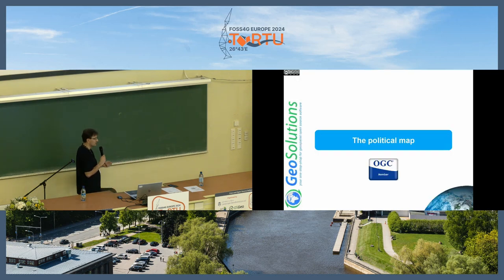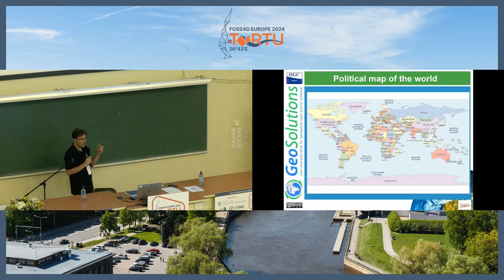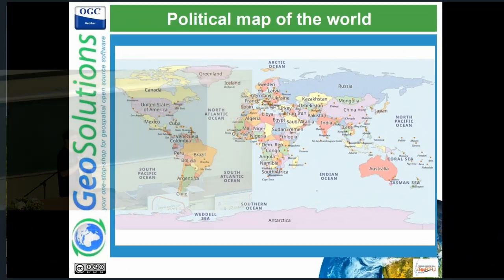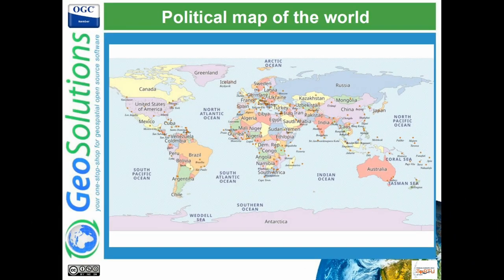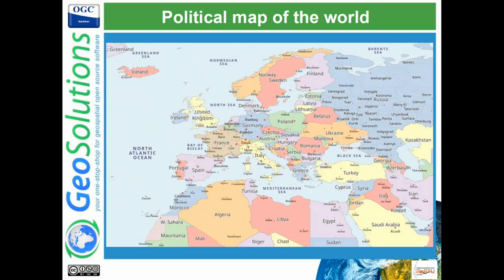So we wanted to have something simpler, and I wanted to have something that reminded me of the old political atlases I had as a kid printed to explore. So we took the Natural Earth dataset and prepared this type of map.